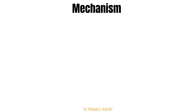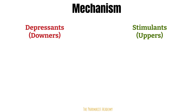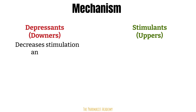Have you ever heard of depressants or downers and stimulants or uppers? Think of these terms as a way of describing the effects that certain substances have on the body. If a substance has a depressant effect on the body, this will lead to decreased stimulation and arousal.